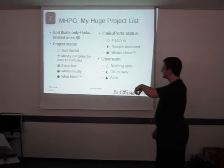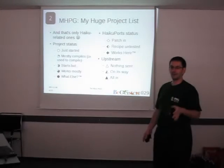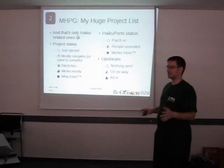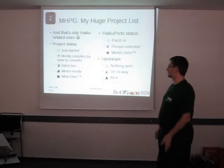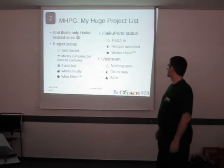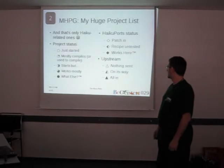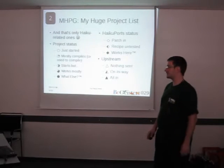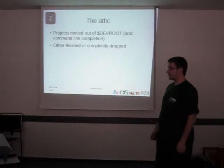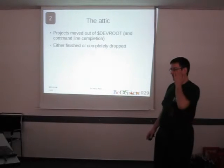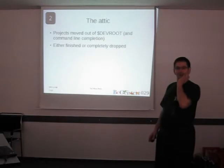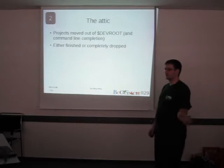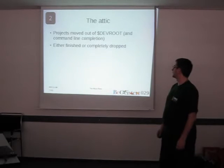I made some nice Unicode art to summarize the current status for each project. The pie chart symbol shows how much compiles and works. The diamond shape indicates whether it's in Haiku ports or not — not always my own work, but I try to check all of them. And the arrow shows the upstream status: whether patches were sent and accepted. First, the attic — stuff that I don't think I will ever work on again, so I moved them away from the default folder.